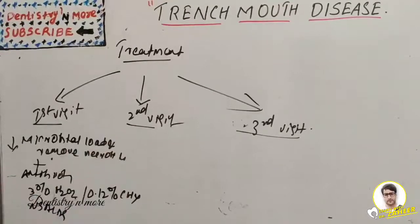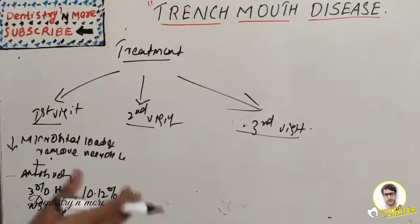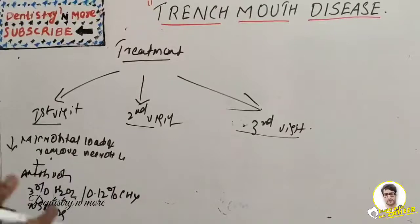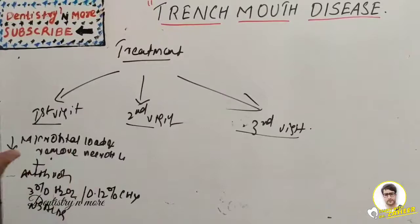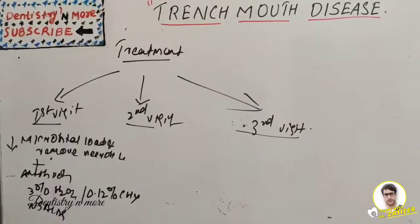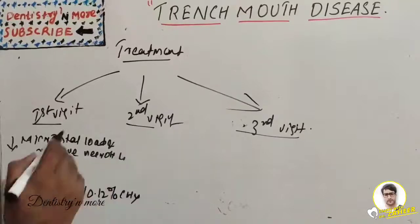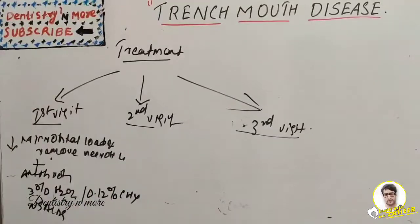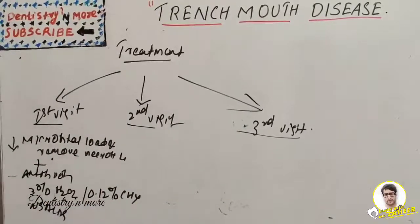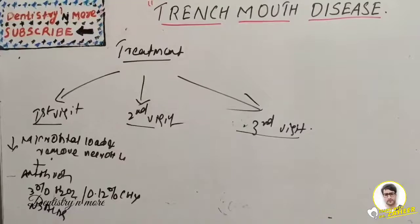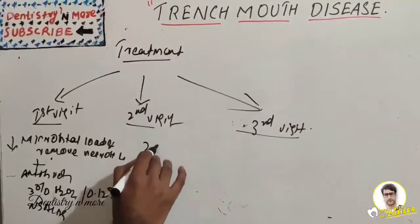On the second visit, after two days, the patient is evaluated for resolution of signs and symptoms. The lesion appears erythematous without a superficial pseudomembrane. There may be shrinkage of the gingiva which can expose previously covered calculus, which is gently removed. Instructions from the first visit are repeated.